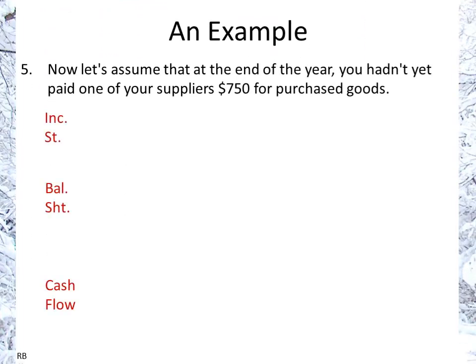Now we're going to add another twist. At the end of the year, let's assume the company has not paid one of its suppliers $750 worth of purchased goods. Again, the income statement is going to be the same — profits of $5,000. The balance sheet, however, will show that we owe a supplier, so that's going to be a current liability — accounts payable of $750 for purchased goods. Because we haven't paid the supplier and that amount is already in the income statement as an expense, we're actually looking at $750 worth of cash that hasn't yet been laid out. So we're going to have $750 more than we did in the previous example.